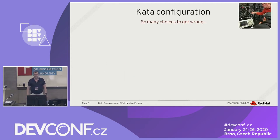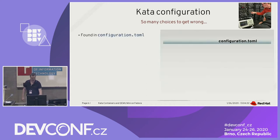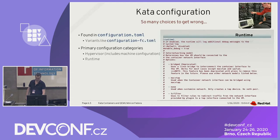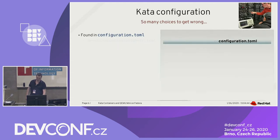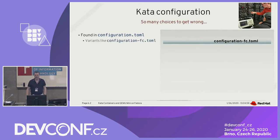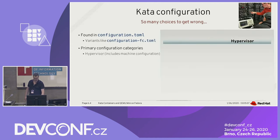In terms of configuration, there is a lot you can configure with Kata. It's found in the configuration.toml file. There are variants for Firecracker, for instance. The configuration.toml is where you have your various configuration options. The runtime section has pretty standard config options — I'm listing them so you know where to look. I'm sorry they show up empty; that's the thing with having the presentation generate content in real time.